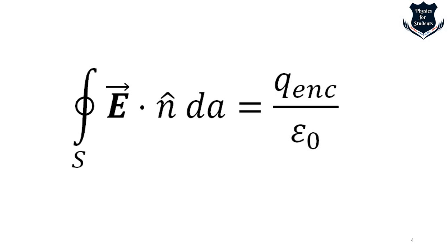Field theory has its origin in the 18th century in a mathematical formulation of Newtonian mechanics, but it was not formalized until 1852. Michael Faraday treated magnetic fields as a physical object, reasoning about lines of force. James Clerk Maxwell used Faraday's conceptualization to help formulate his unification of electricity and magnetism in his electromagnetic theory.